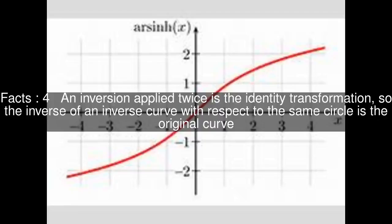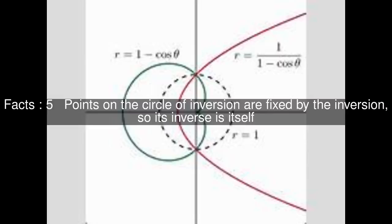An inversion applied twice is the identity transformation, so the inverse of an inverse curve with respect to the same circle is the original curve. Points on the circle of inversion are fixed by the inversion, so its inverse is itself.